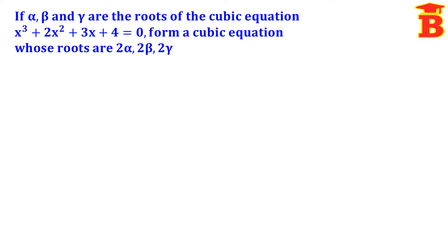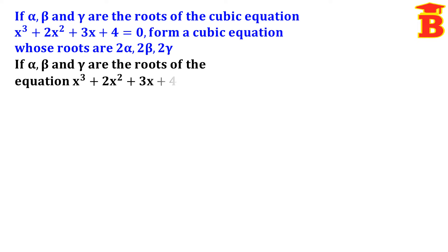Now let us see the problems. If alpha, beta and gamma are the roots of the cubic equation x cubed plus 2x squared plus 3x plus 4 equal to 0, form a cubic equation whose roots are 2 alpha, 2 beta, 2 gamma. First, let us write the given values: alpha, beta and gamma are the roots of x cubed plus 2x squared plus 3x plus 4 equal to 0.